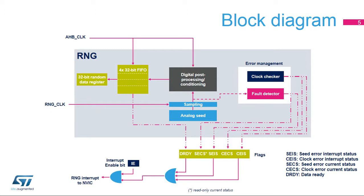In parallel, an error management block verifies the correct seed behavior and the frequency of the RNG source clock. Status bits are set and an interrupt is triggered if an abnormal sequence is detected in the seed, or if the RNG frequency is too low.